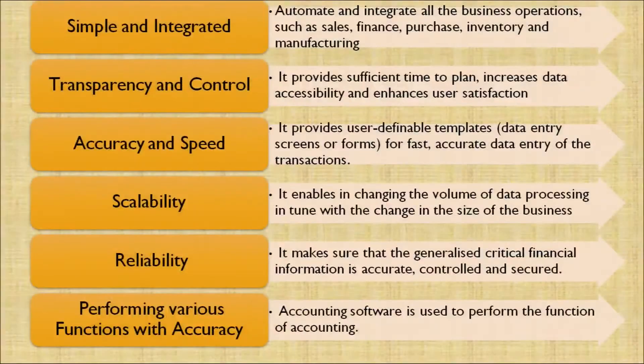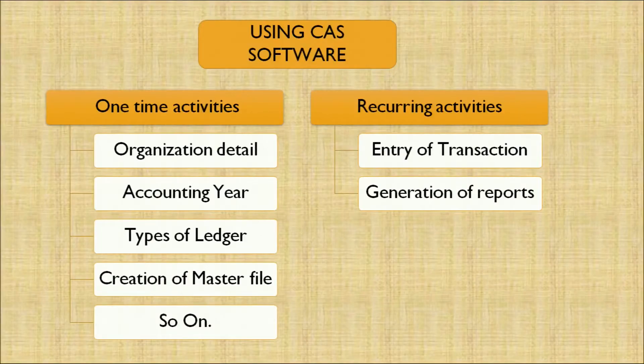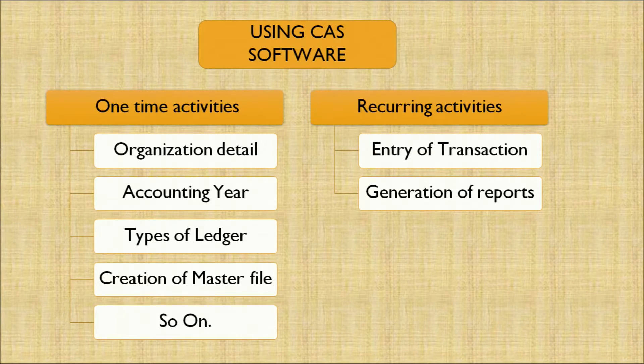Last, performing various functions with accuracy: accounting software is used to perform accounting functions, and therefore accounting is processed with accuracy through a computer-aided system. There could be one-time activities and recurring activities. One-time activities include organization details, accounting years, type of ledgers, creation of a master file, and so on. Recurring activities include entry of transactions and generation of reports.